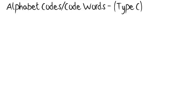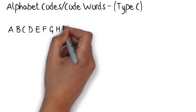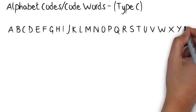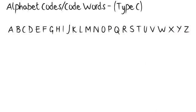With these questions, you can use the alphabet to work out the code that has been used, and then use this code to read another word. Each question will have one word and the coded version of that word. Using these two words, you need to work out the link between the letters of the word and the letters of the code.